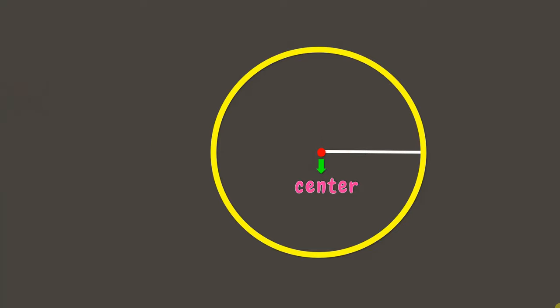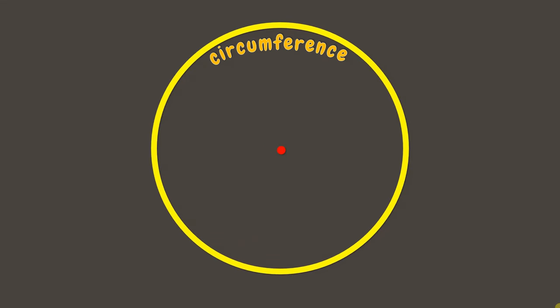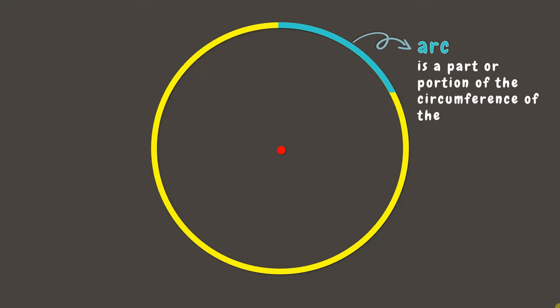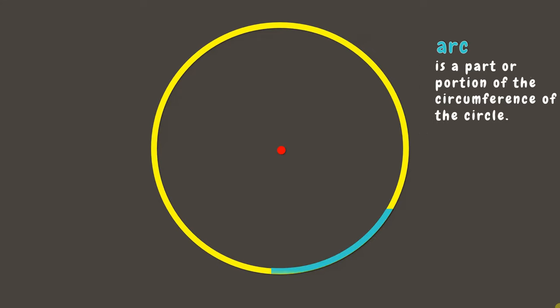Now, another term that you'll be happy to know is the circumference. Circumference is the distance around the circle. A part or portion of the circumference of the circle is called an arc. An arc can be like this, or this. Wonderful!